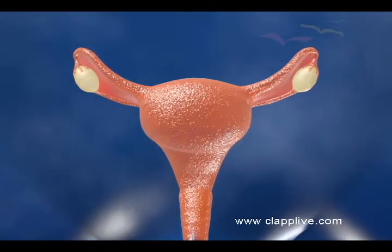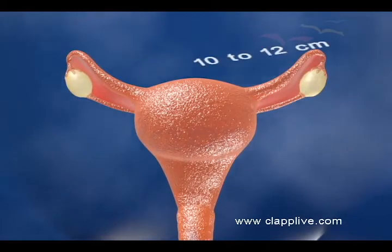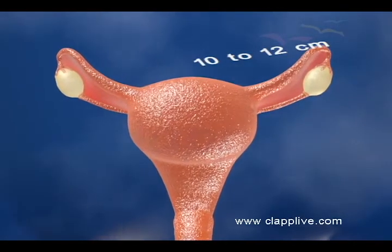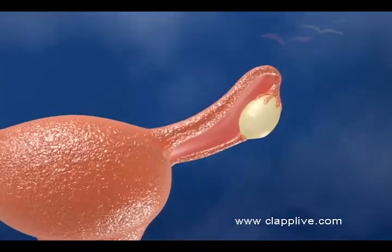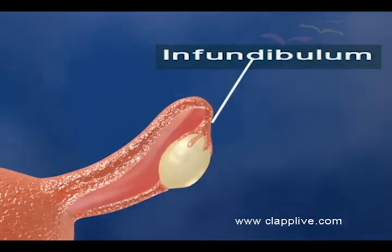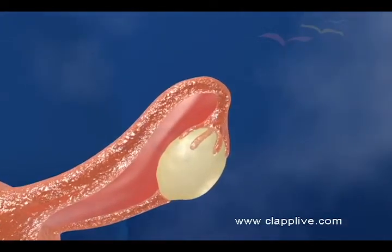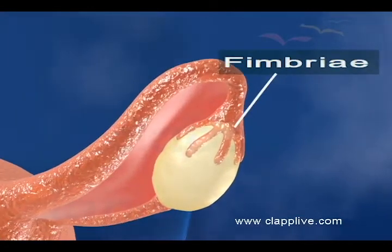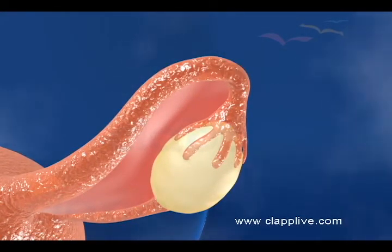Fallopian tubes or oviducts are narrow tubes, about 10–12 cm long, connecting the ovary to the uterus. Each oviduct is differentiated into three parts: infundibulum, ampulla, and isthmus. Infundibulum is the funnel-shaped proximal part and has finger-like projections called fimbriae at its margin. Fimbriae are very close to the ovaries and receive the egg released from the ovaries.